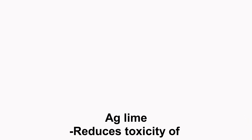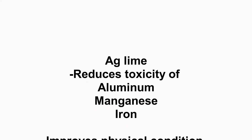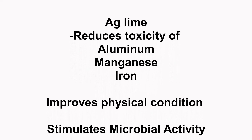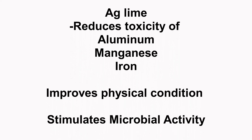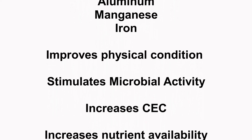Agricultural lime can remedy low soil pH and creates additional benefits. Ag lime reduces toxicity of aluminum, manganese, and iron. It improves the physical condition of the soil to a more desirable granular form and structure. It stimulates microbial activity. It increases the cation exchange capacity.